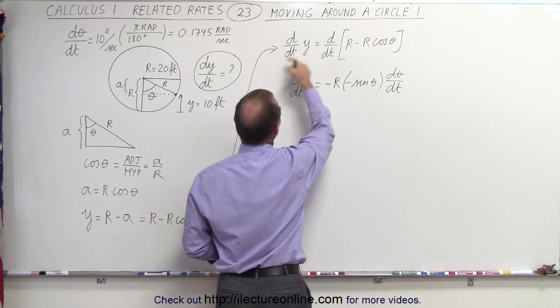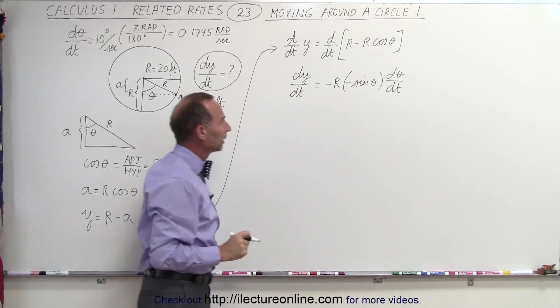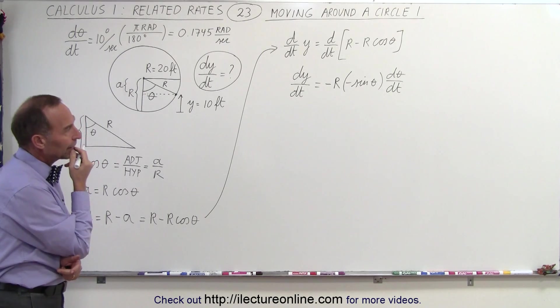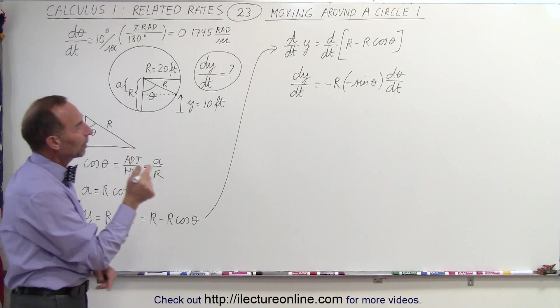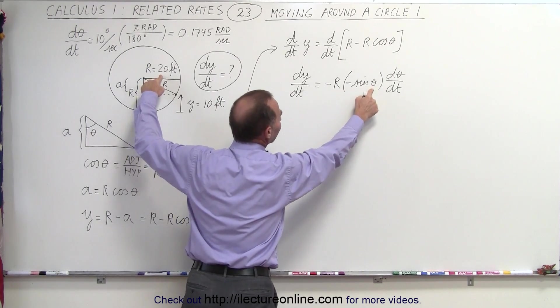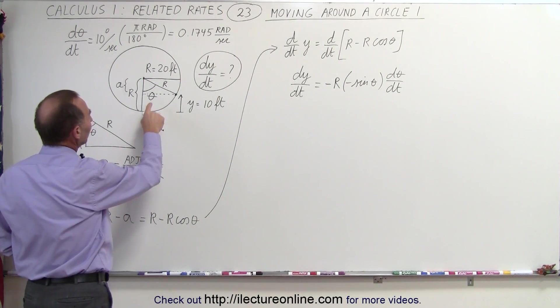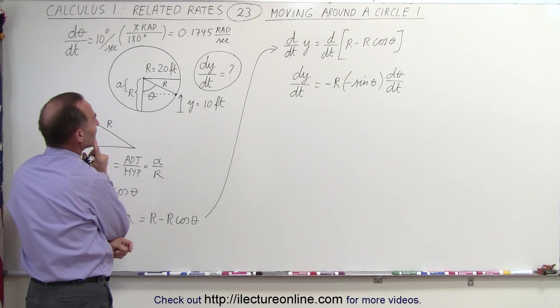So now we have a relationship between the change in the height to the change in the angle. All right, now the only thing left to do is plug in what r is, which we know that's 20 feet, and the sine of theta. We need to know the angle theta to plug into our equation. What is theta when y is 10 feet?